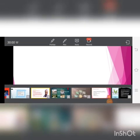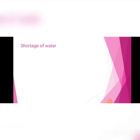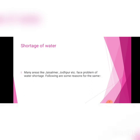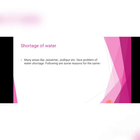The first topic we are going to cover is shortage of water. Many areas like Jaisalmer, Jodhpur, etc. face the problem of water shortage. But have you ever wondered why this happens? The following are some reasons for the same.